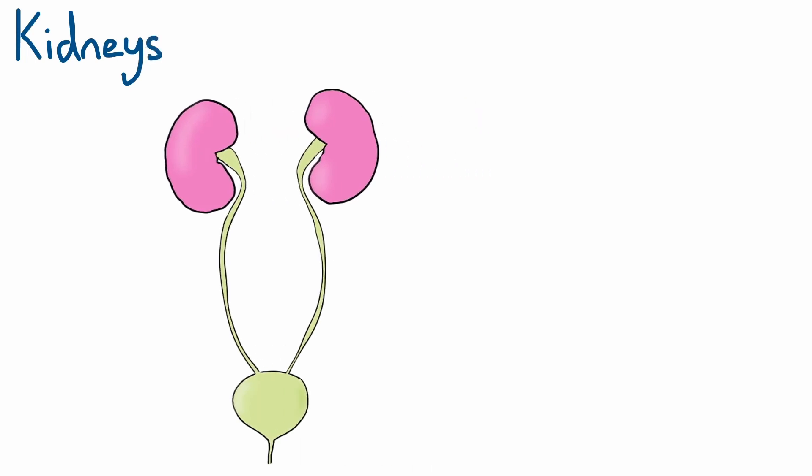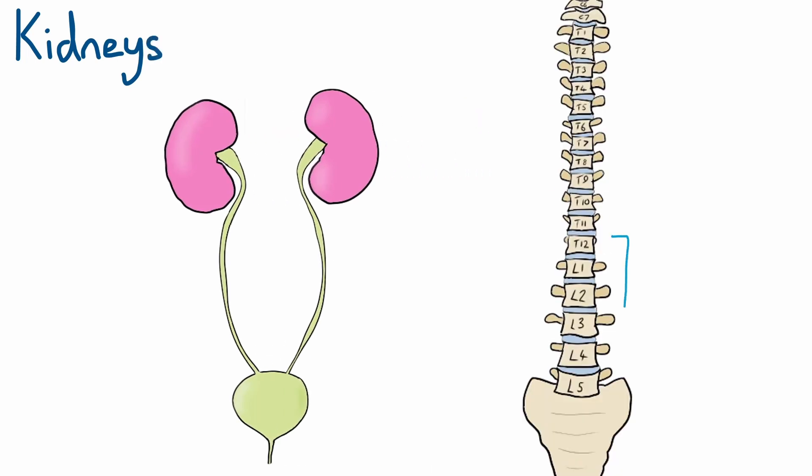They can be found at the vertebral level T12 to L3, with the right kidney sitting slightly lower due to the liver. They're around 12cm in length, or around 3 vertebrae. Each kidney also has an adrenal gland sitting on its superior pole.